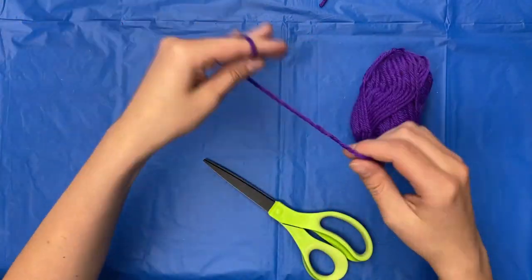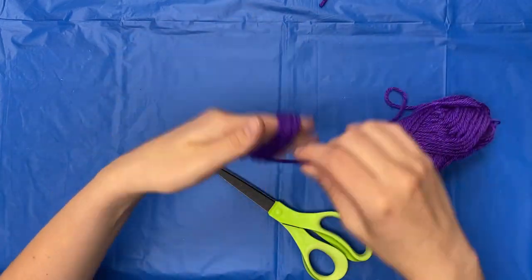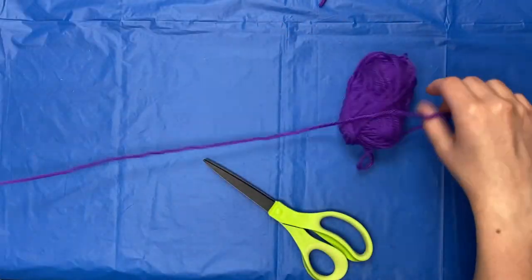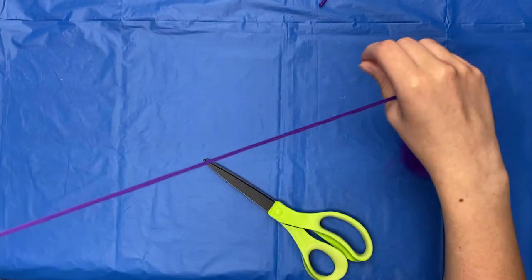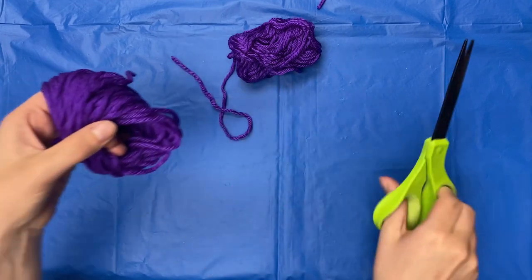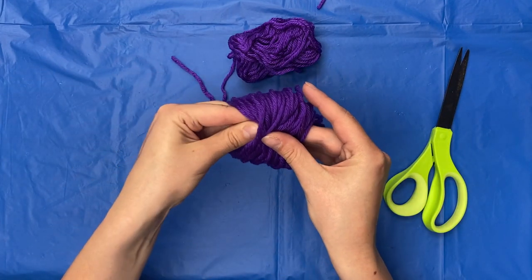Then take your yarn and start wrapping it around your fingers. You will want to wrap it about 90 times. Cut off the string and carefully slide it off your fingers.